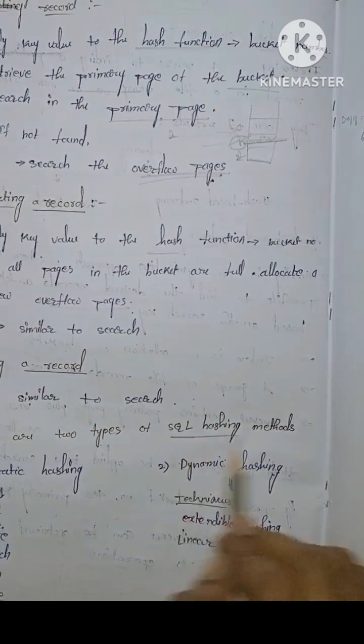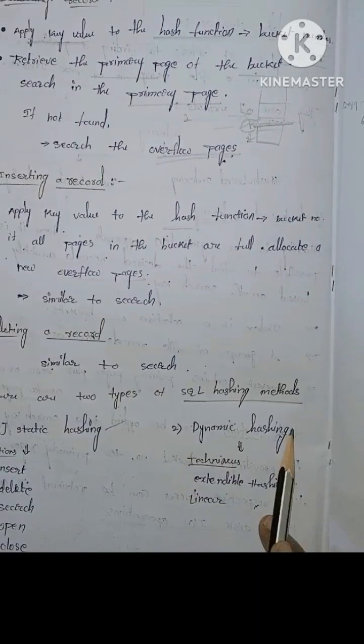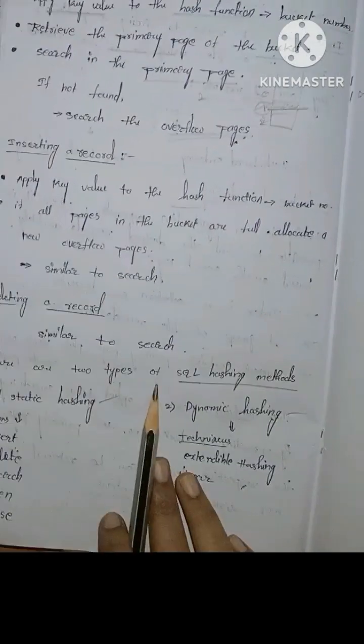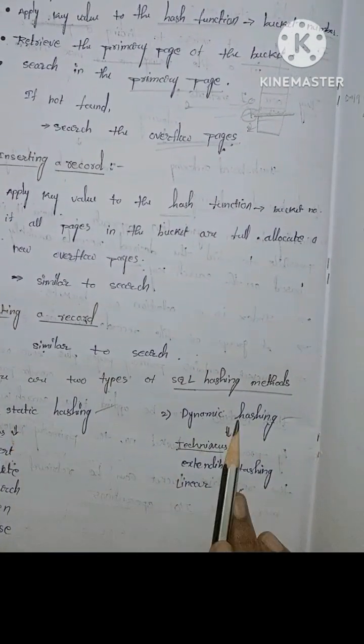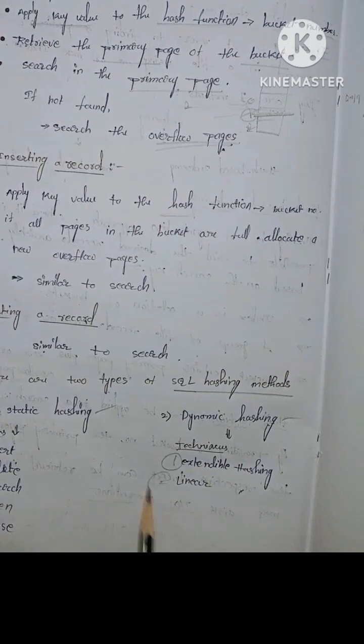There are two types of hashing methods. First one is static hashing and dynamic hashing. In the same functions: insert, delete, search, open, close functions. In dynamic hashing, we have techniques too: extendable hashing and linear hashing.